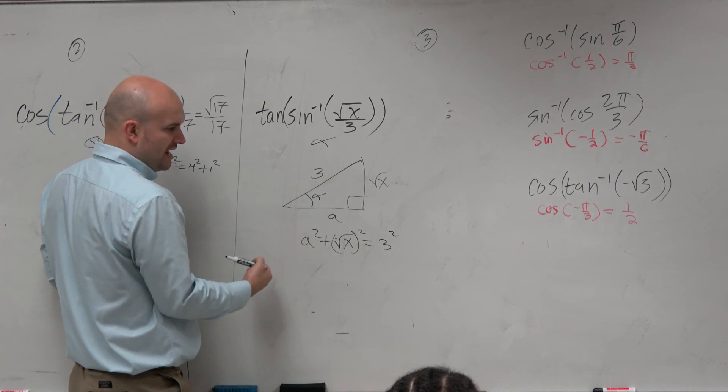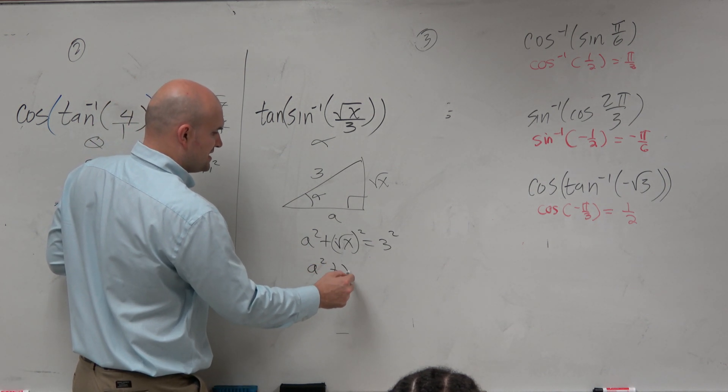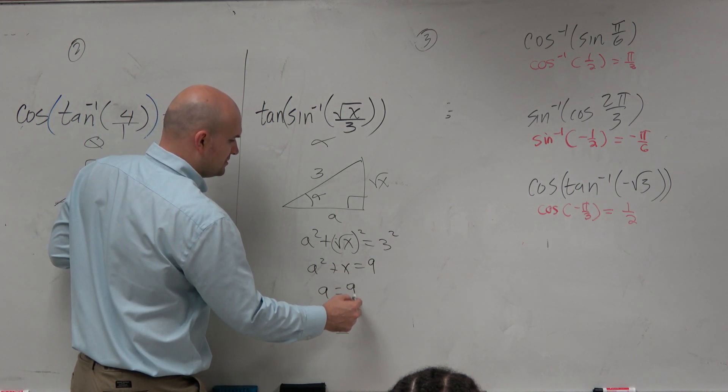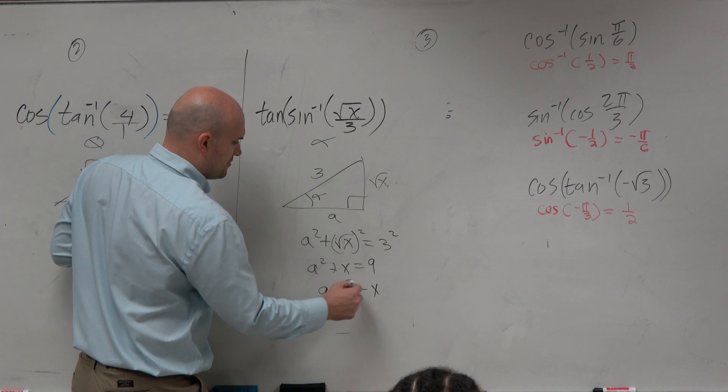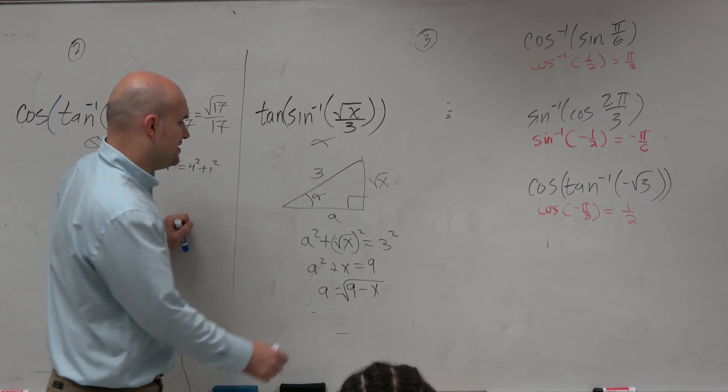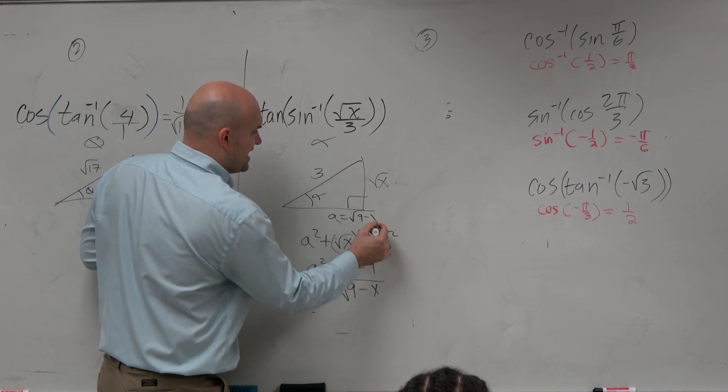And then basically I'm going to solve for A. When doing that, I get A squared plus X equals 9. So therefore, A is equal to the square root of 9 minus X.